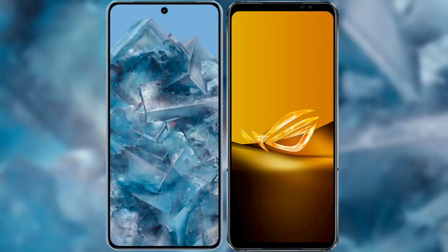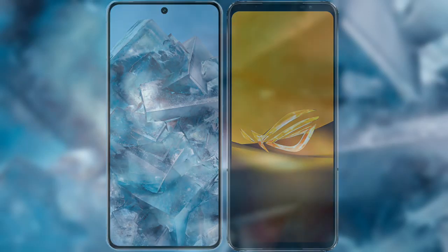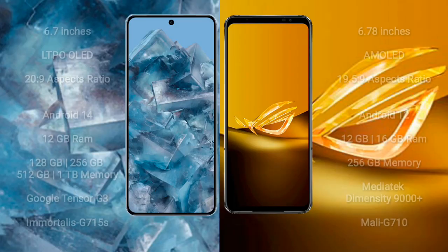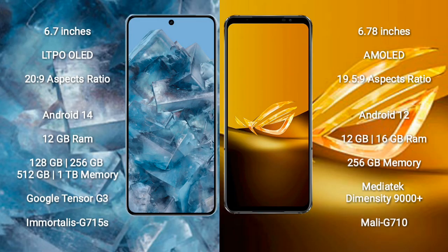I will compare the new Google Pixel 8 Pro with the ASUS ROG Phone 6D. The Google Pixel 8 Pro comes with a 6.7-inch LTPO OLED display with an aspect ratio of 20:9. The ASUS ROG Phone 6D comes with a 6.78-inch AMOLED display with an aspect ratio of 19.5:9.